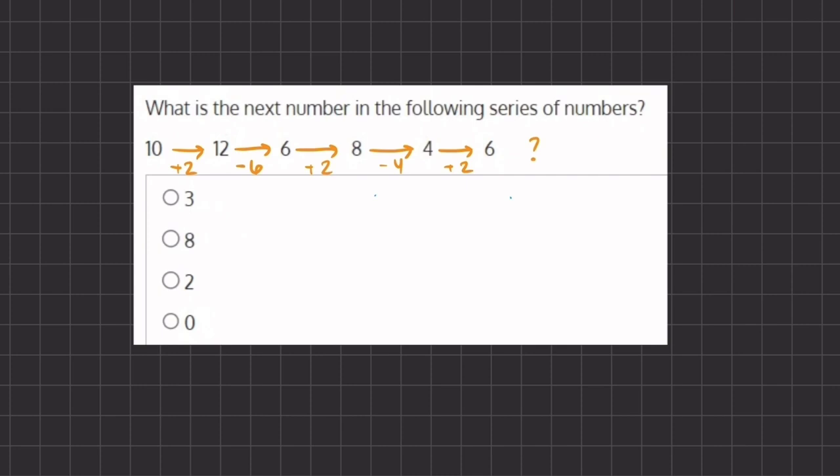It seems like our addition is constant. We keep adding a positive 2, adding 2, adding 2, and it switches off between addition and subtraction. And our subtraction keeps decreasing by 2. So here we subtracted 6...